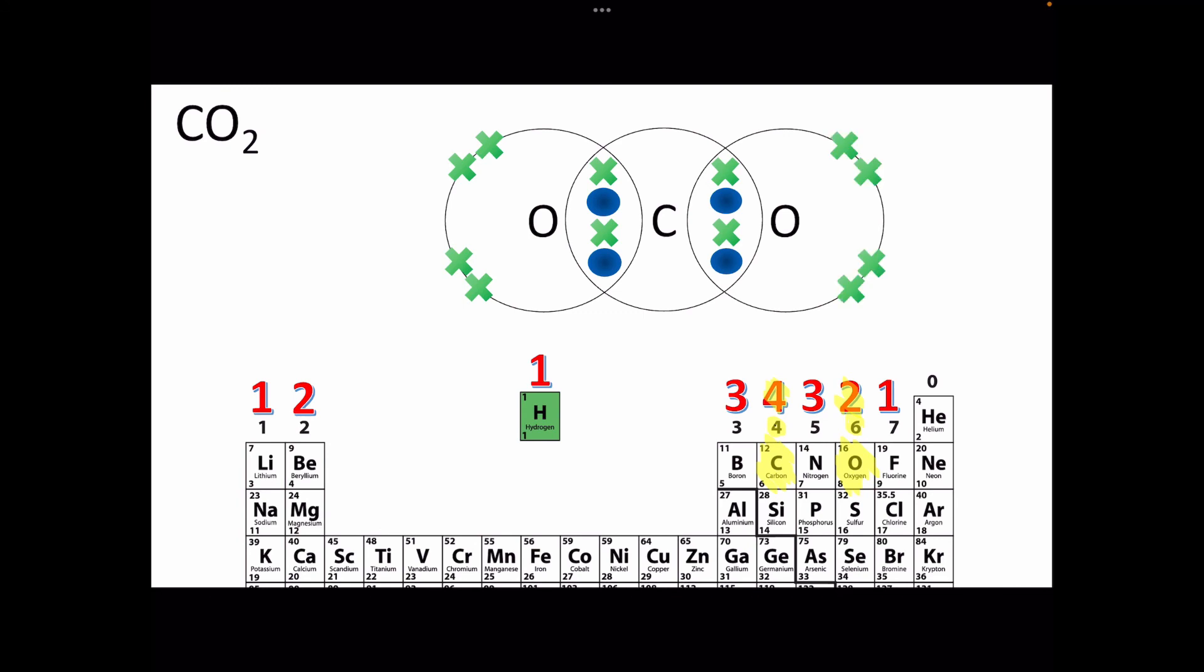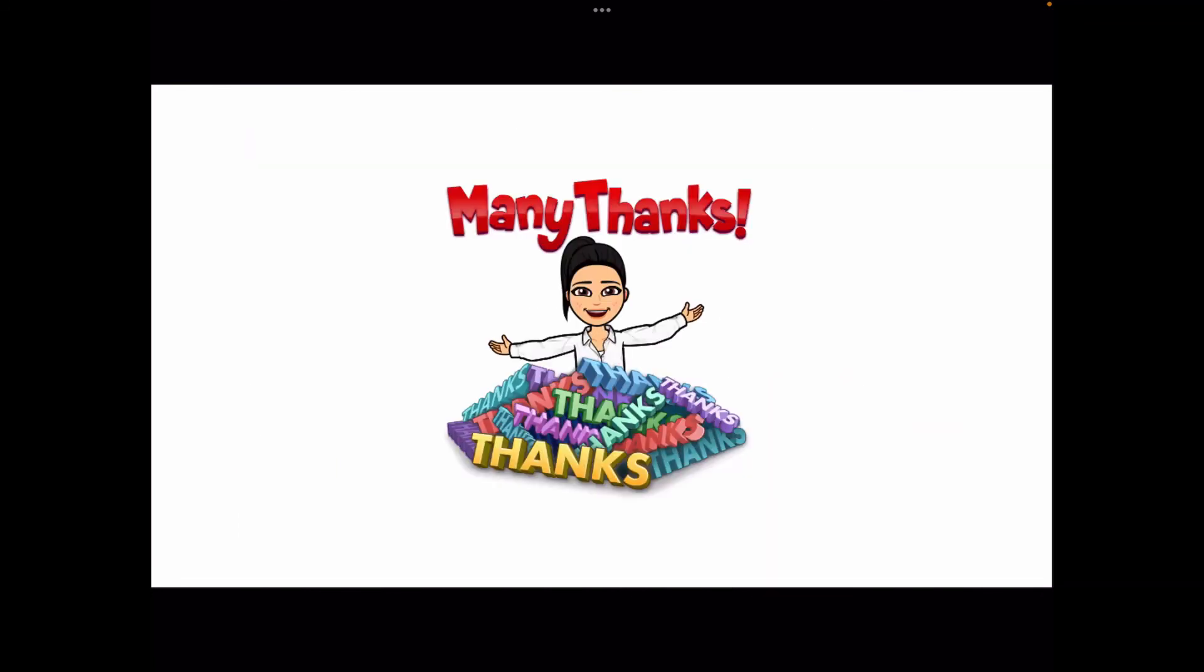This now means that each of the oxygen atoms and the carbon atom all have eight electrons in their outer shell. So this is the dot and cross diagram for carbon dioxide. Thanks for watching, I hope you find this helpful.